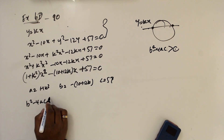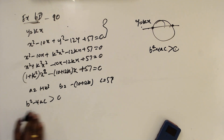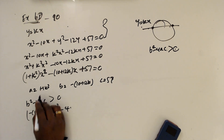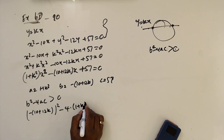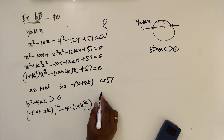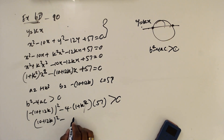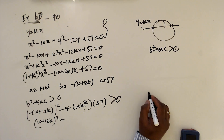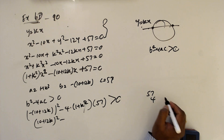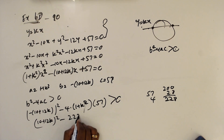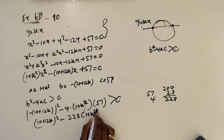b² - 4ac has to be greater than 0 because there are two distinct points. So: (-(10 + 12k))² minus 4 times (1 + k²) times 57 greater than 0. That gives (10 + 12k)² minus 228(1 + k²) greater than 0.